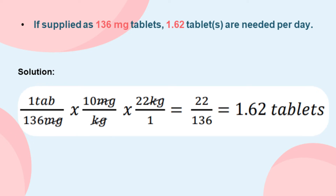If supplied as 136-milligram tablets, how many tablets are needed per day? To calculate, 1 tablet divided by 136 milligrams is multiplied by 10 milligrams per kilogram and by 22 kilograms. Cancel out the common units of measurement. We come up with the answer: 1.62 tablets per day.